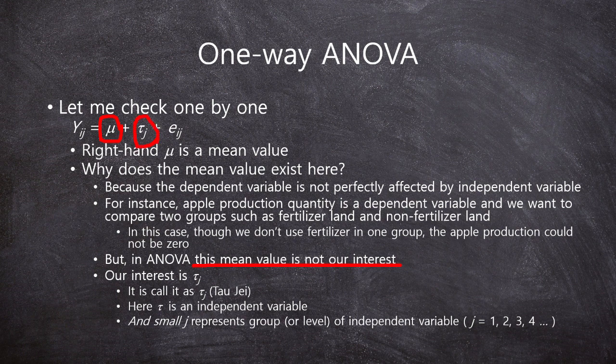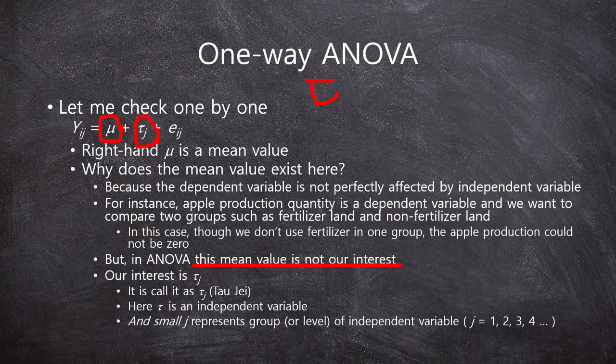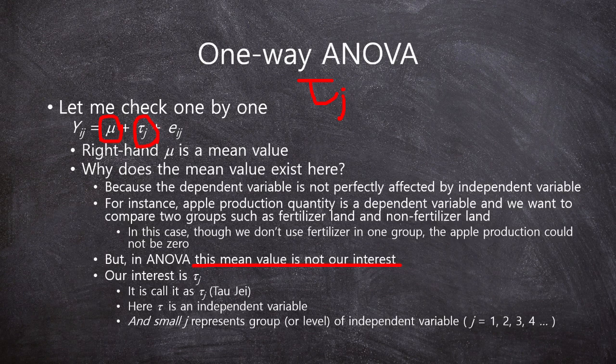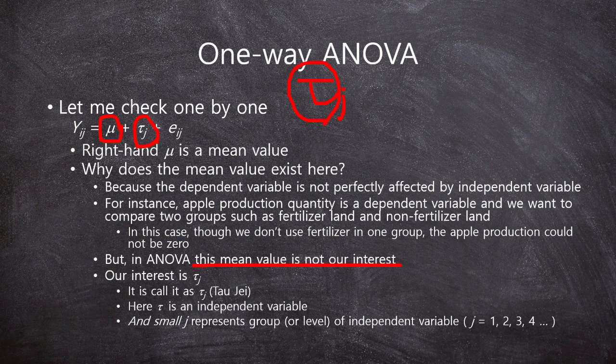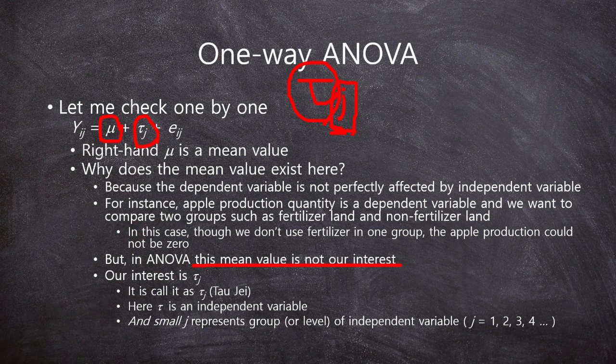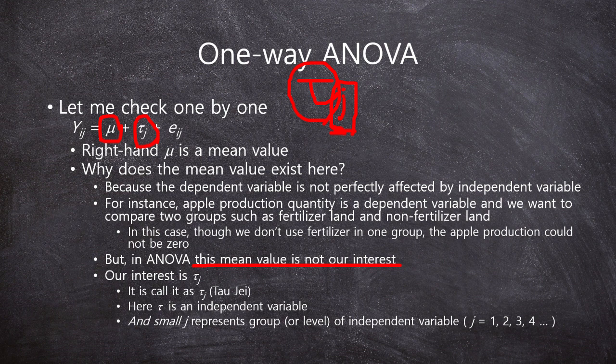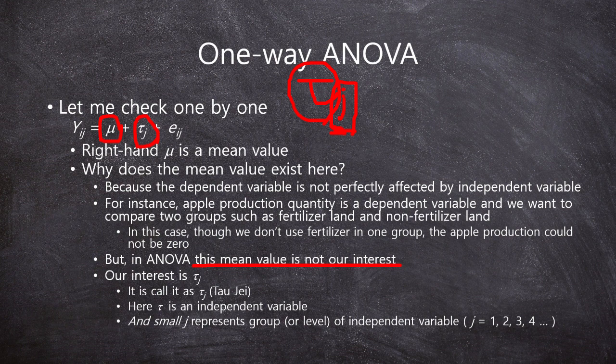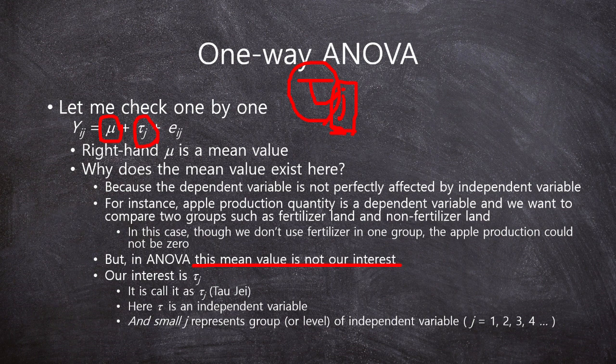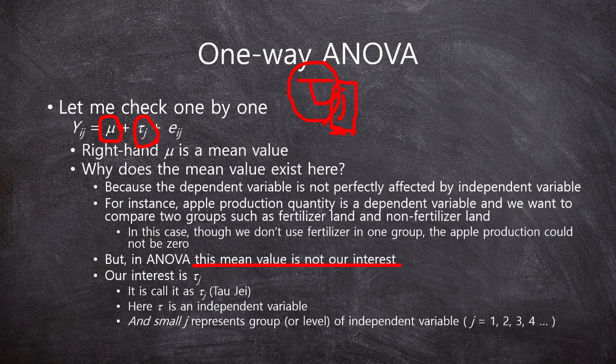Our interest is the second one, tau j. We call it tau j. The tau is also a Greek character. Tau is an independent variable. This tau represents the independent variable here. And the small j, this small j represents the group or level of independent variables. In prior video, we checked the three examples of the one-way ANOVA. And in those examples, the independent variable has three or four groups or levels in the independent variable. So, this j means the group.